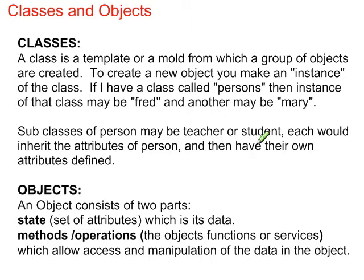A subclass of a person may be teacher or student. A teacher or a student class would each inherit the person attributes and methods, and then you could build upon that and modify those or add new ones. The two concepts of an object are its attributes or state — which is the data that's held — and the methods that allow you to access or manipulate that data.